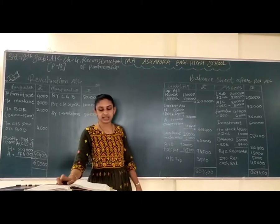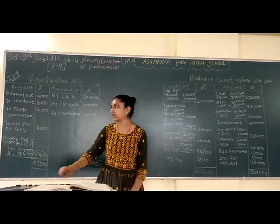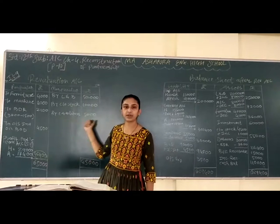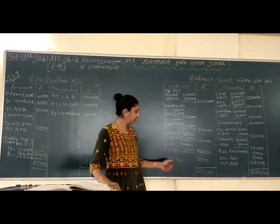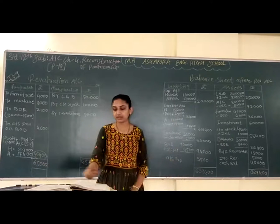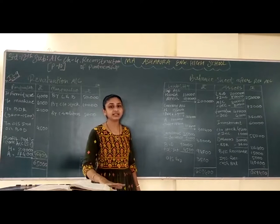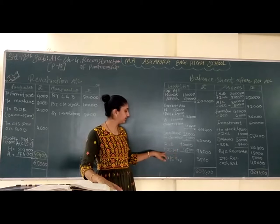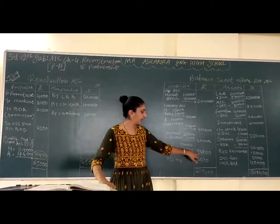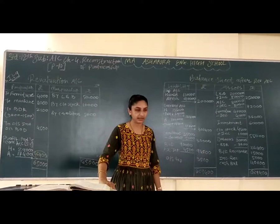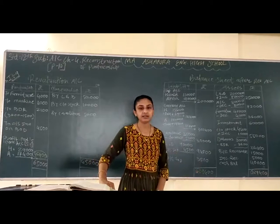Iske baad hai creditors. Balance sheet mein the 35,000 — creditors mein 5,000 decrease ho gayi, to minus 5,000; outer column mein 30,000. Iske baad hai bank overdraft — balance sheet mein diya gaya tha 90,000. Outstanding interest on bank overdraft is adding to the bank overdraft, to bank overdraft 90,000 plus outstanding interest 4,500; outer column mein 94,500. Uske baad hai outstanding expenses — yahan pe no changes, and it is 3,500.